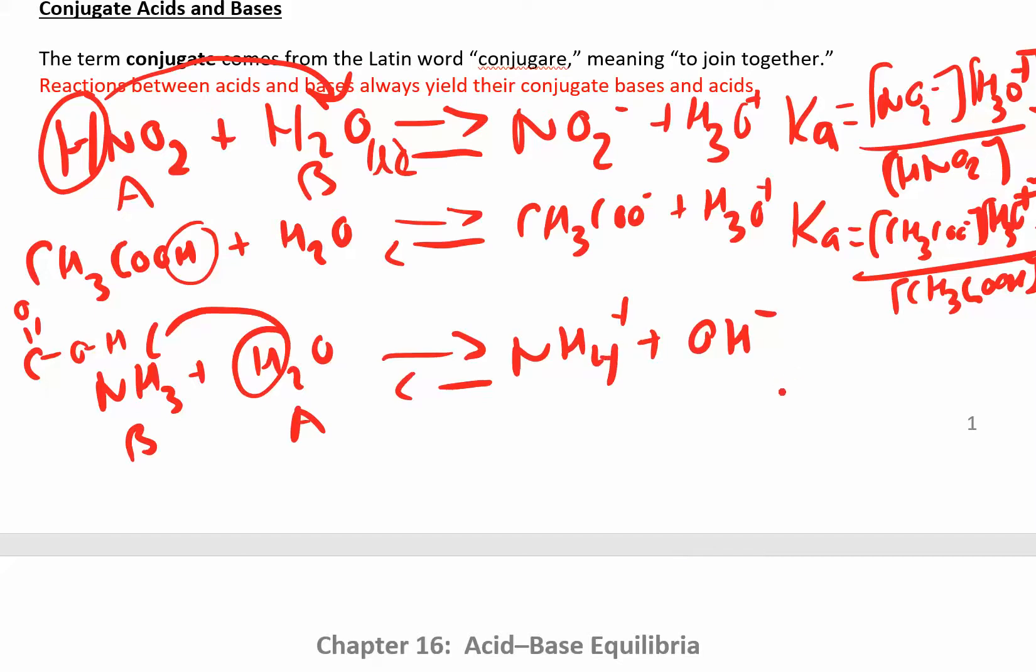And now since you have a weak base in water, we write a KB expression. That B just means base. And so you have NH4 plus and OH minus all over NH3. And so all of these Ka values you can find in a table. We'll look at those later. And the bigger the Ka, the stronger the acid is going to be. And so we'll look at that again too.